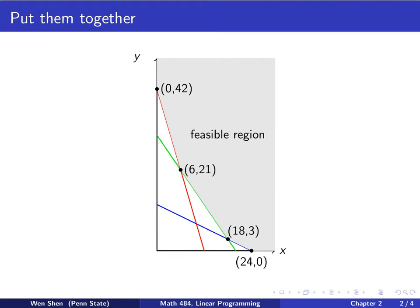If you did your computation at the same time, then you will find out that this point has coordinate 0, 42. This point, the intersection between these two lines, is 6, 21. And this point, being the intersection of the blue and the green line, is 18 and 3. And this point, the x-intercept of the blue line, is 24. So we label those. Because these points are possibly of interest to us.